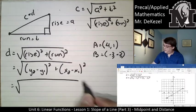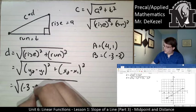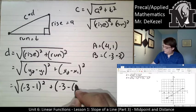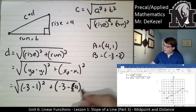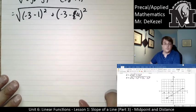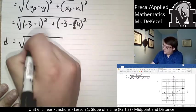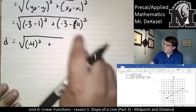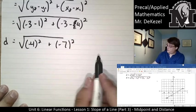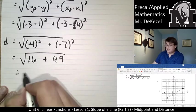Distance is equal to the root of y2, so that's -3 minus y1, which is 1, squared, plus -3 for x2, subtract 4, and then that whole thing is squared. So now we have distance is equal to the root of -3 minus 1 is -4, squared. -3 minus 4 is -7 squared. So I'm going to have the root of 16 plus 49, which is the root of 65.